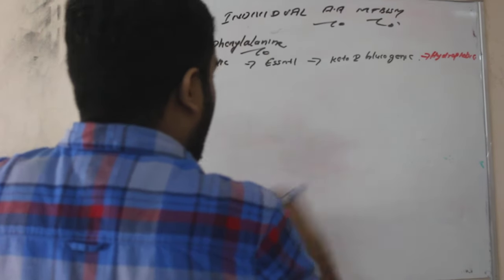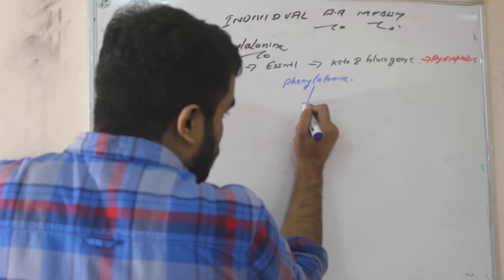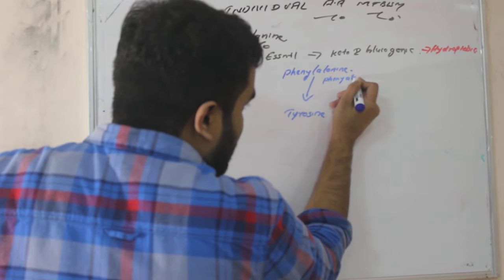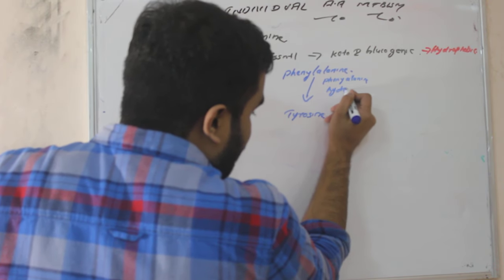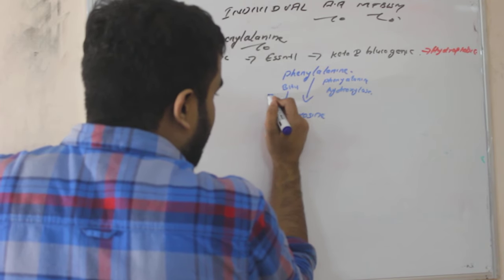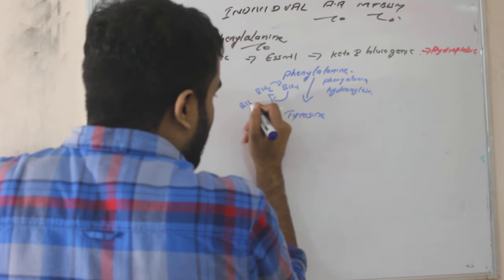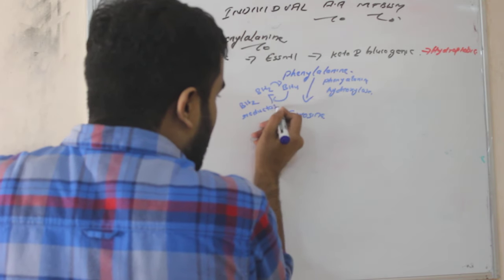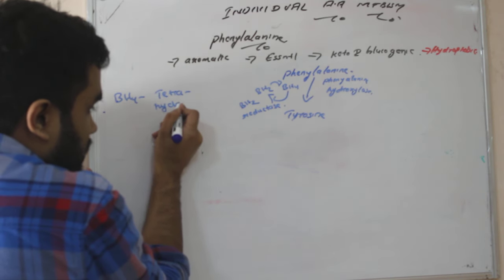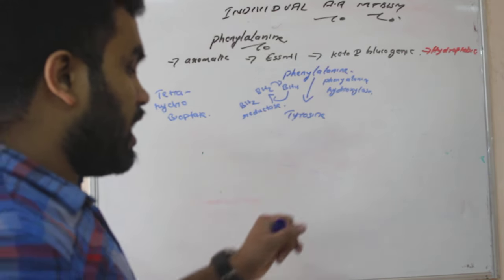Now phenylalanine will be converted to tyrosine by the enzyme phenylalanine hydroxylase. The coenzyme here is BH4. That is BH2 reductase. The enzyme here is BH2 reductase. BH4 means tetrahydrobiopterin and BH2 means dihydrobiopterin. So this is the coenzyme here.